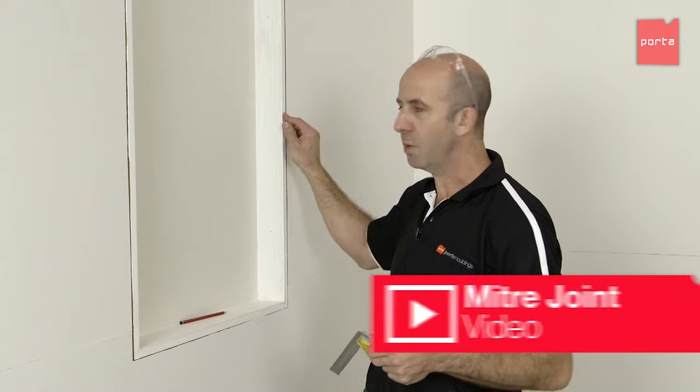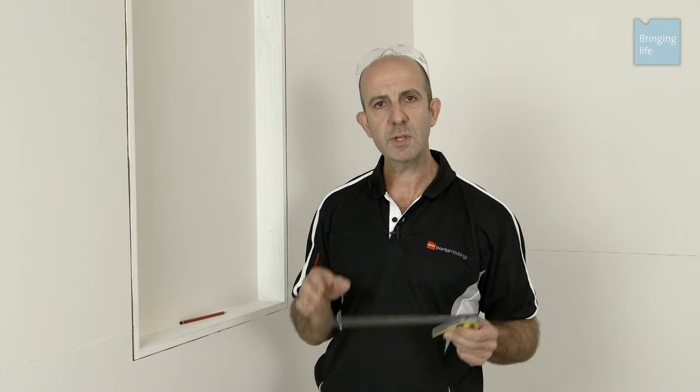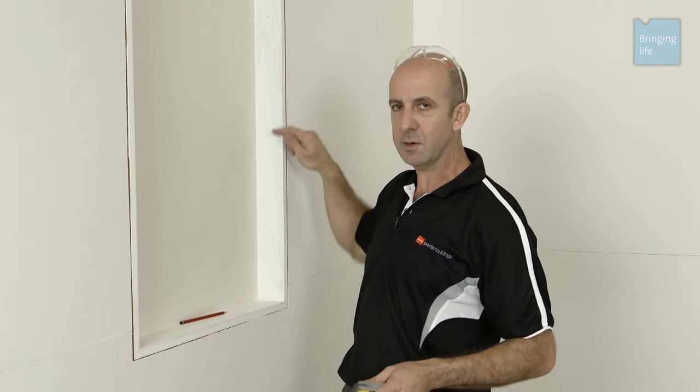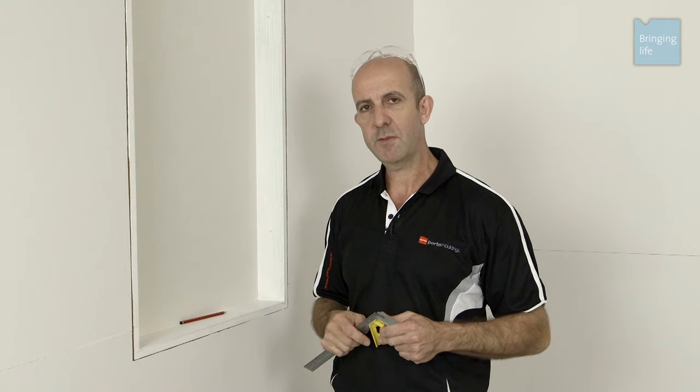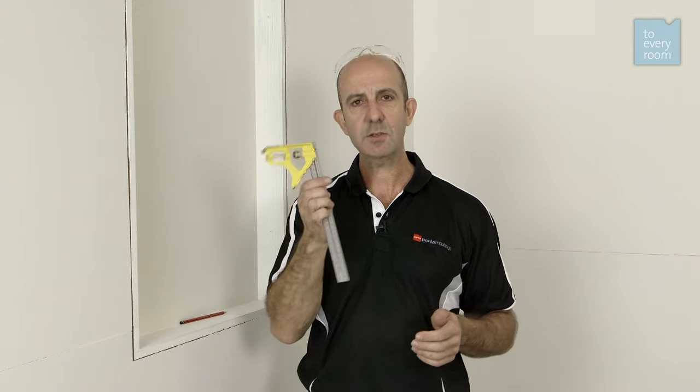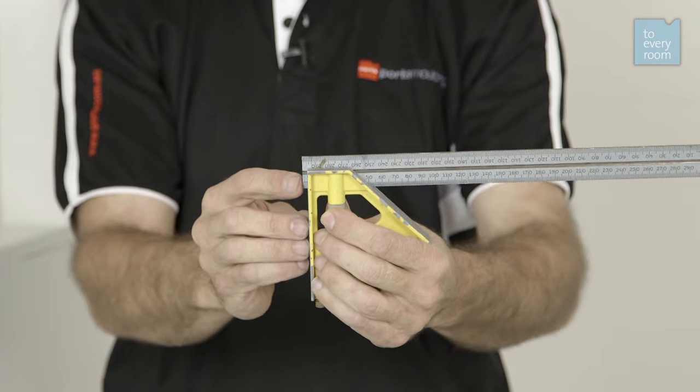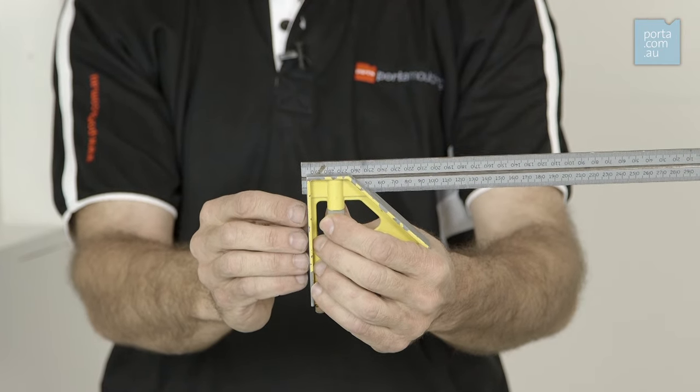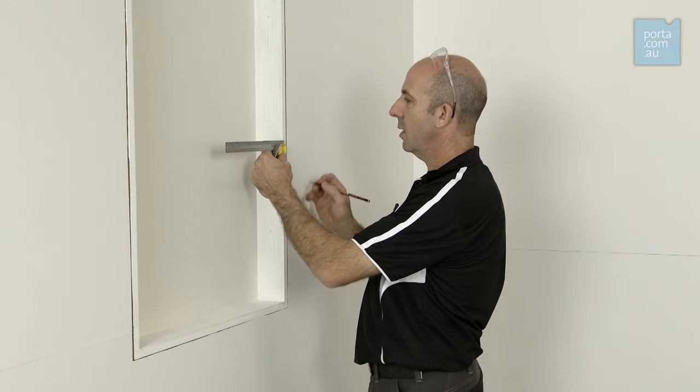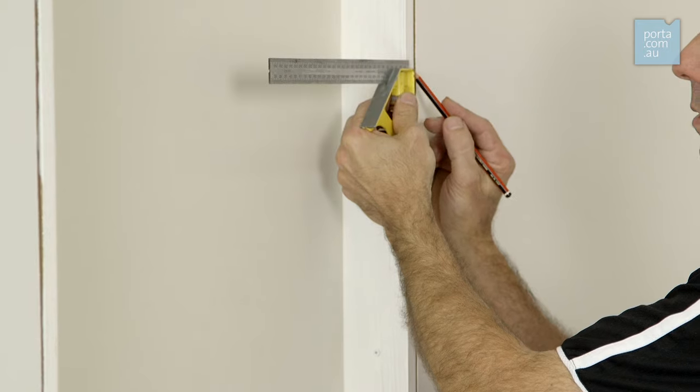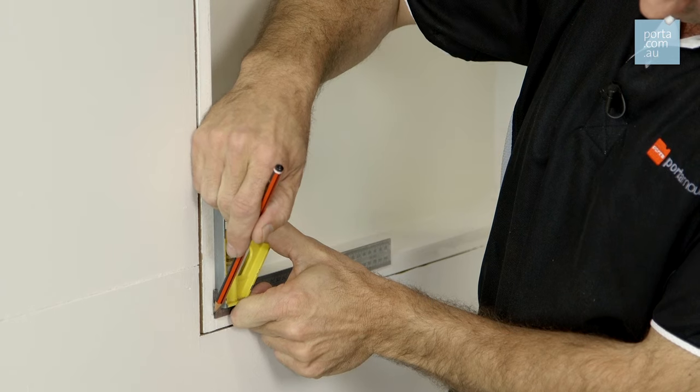Now for the window frame, we're going to use a miter joint. But the first thing you need to do is just mark out your quirk. Now remember the quirk was the distance from the inside of the reveal to the front edge of the architrave. Now the tip is here to use a combination square. I've set my square to three millimeters. I'll simply put that on the inside of my reveal and just mark with a pencil all the way around the frame, and that gives you a nice consistent distance all the way around.